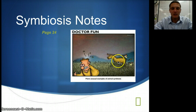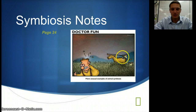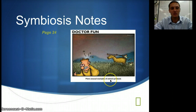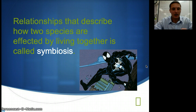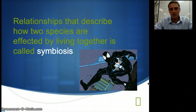This comic is pretty funny because this cow organism is working with a chicken, and they're kind of using a slingshot to shoot rocks at the human — more unusual examples of animal symbiosis. If we want to define symbiosis, it's really the relationship that describes how two species are affected by living together or interacting together. This is Venom from Spider-Man — a symbiote that makes him a bad character — so that's an example of symbiosis for comic fans.